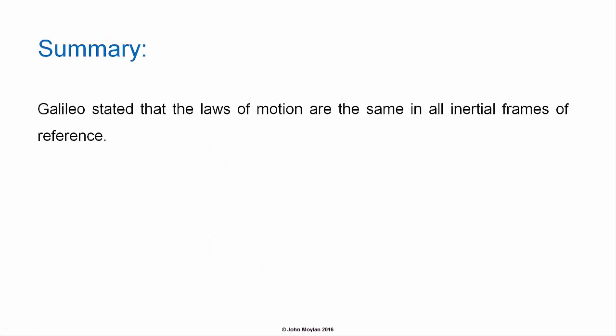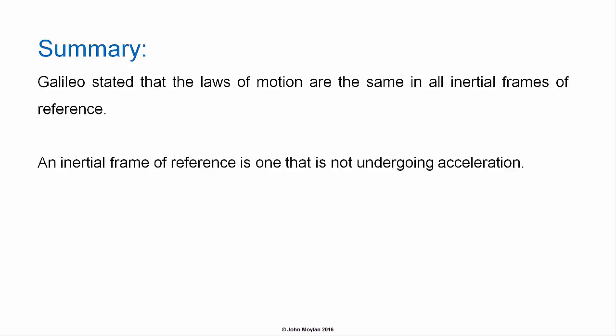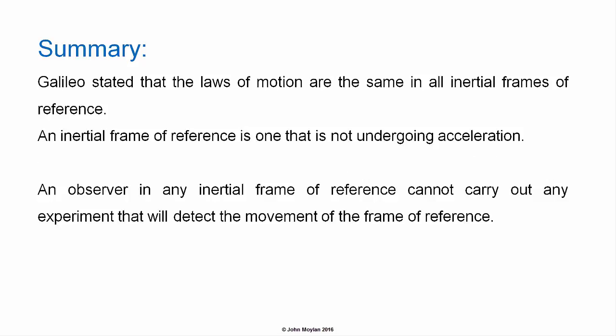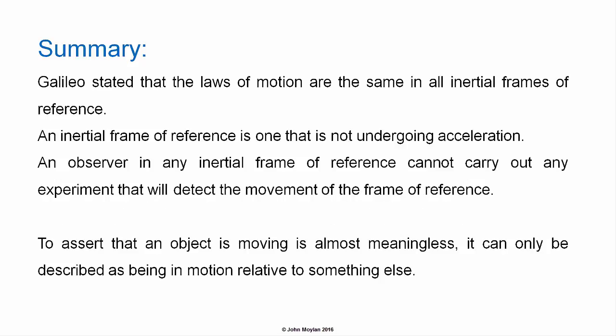Summary. Galileo stated that the laws of motion are the same in all inertial frames of reference. An inertial frame of reference is one that is not undergoing acceleration. An observer in any inertial frame of reference cannot carry out any experiment that will detect the movement of the frame of reference. To assert that an object is moving is almost meaningless. It can only be described as being in motion relative to something else.